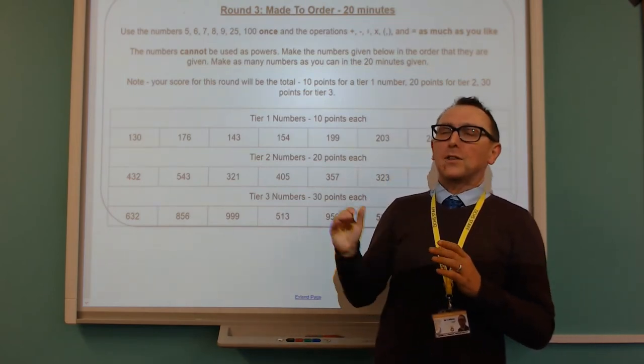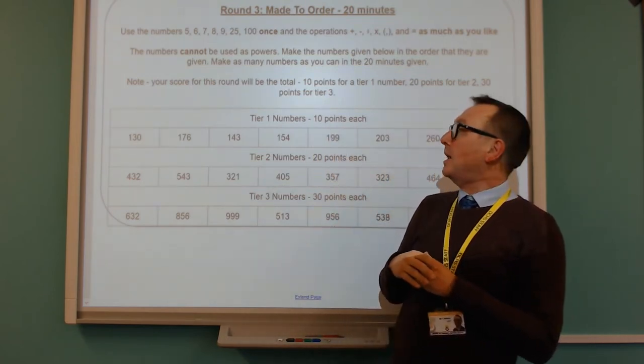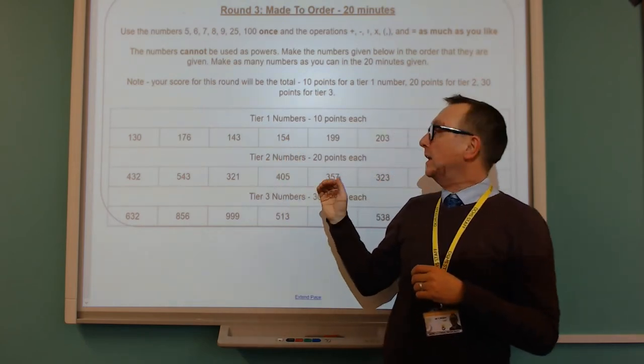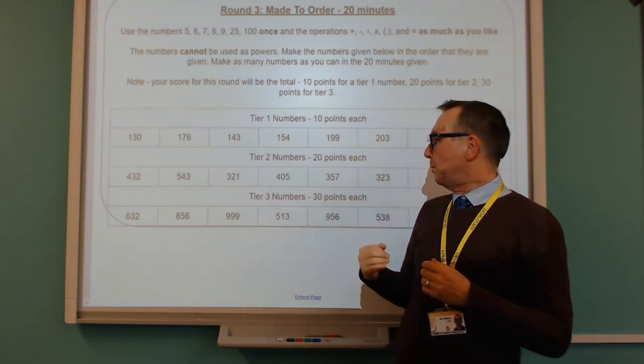We cannot use the numbers as powers though. The numbers just have to be used in the normal way. You'll see for this round there are three tiers. You get 10 points for each of the numbers that you can make in the first tier.